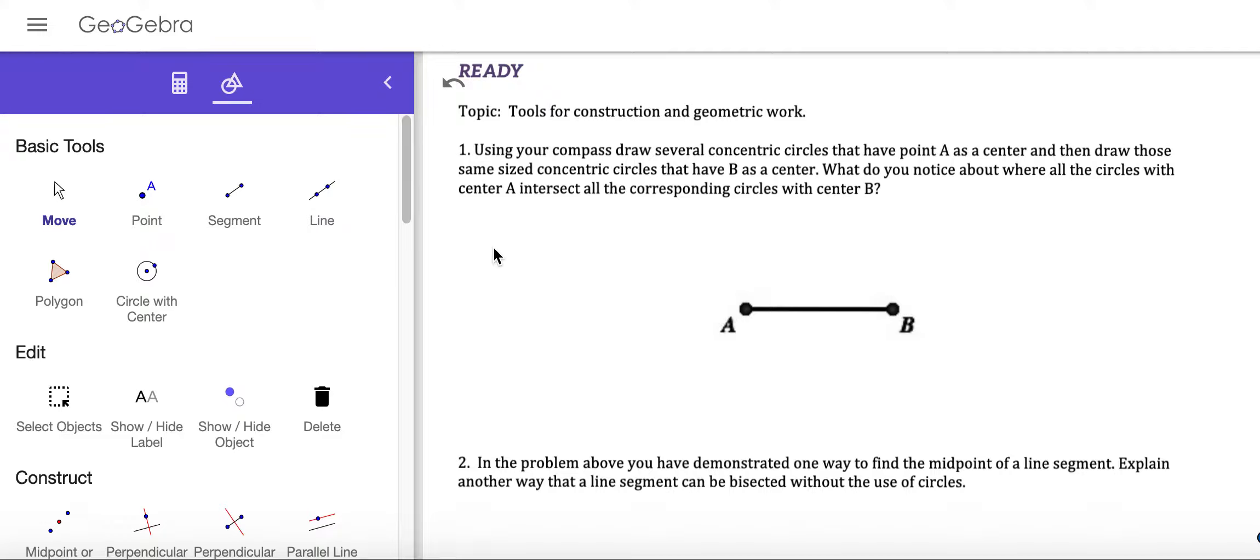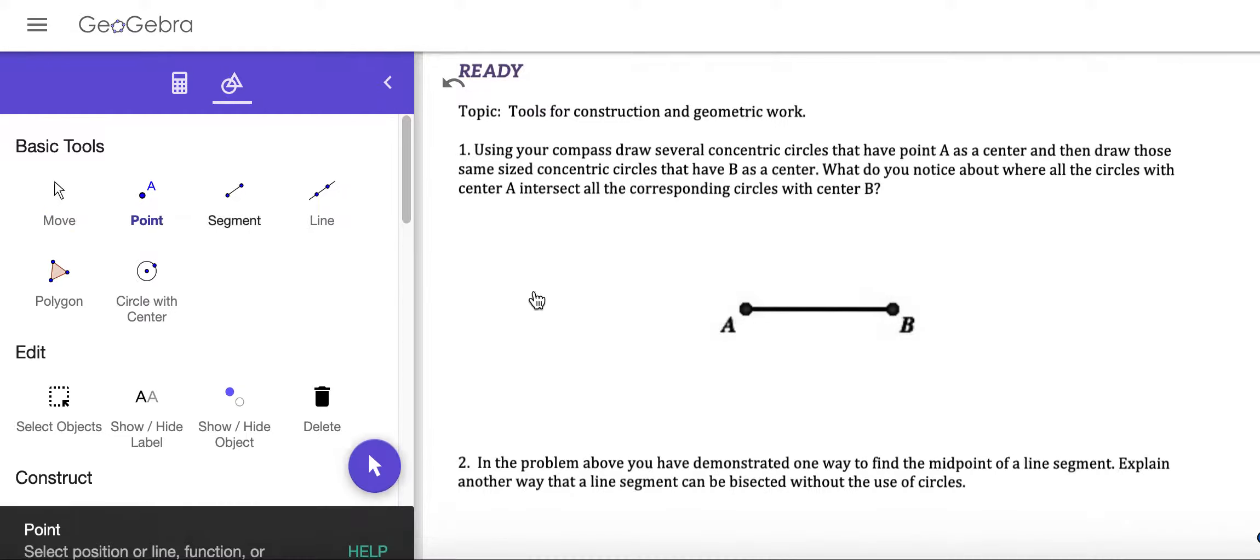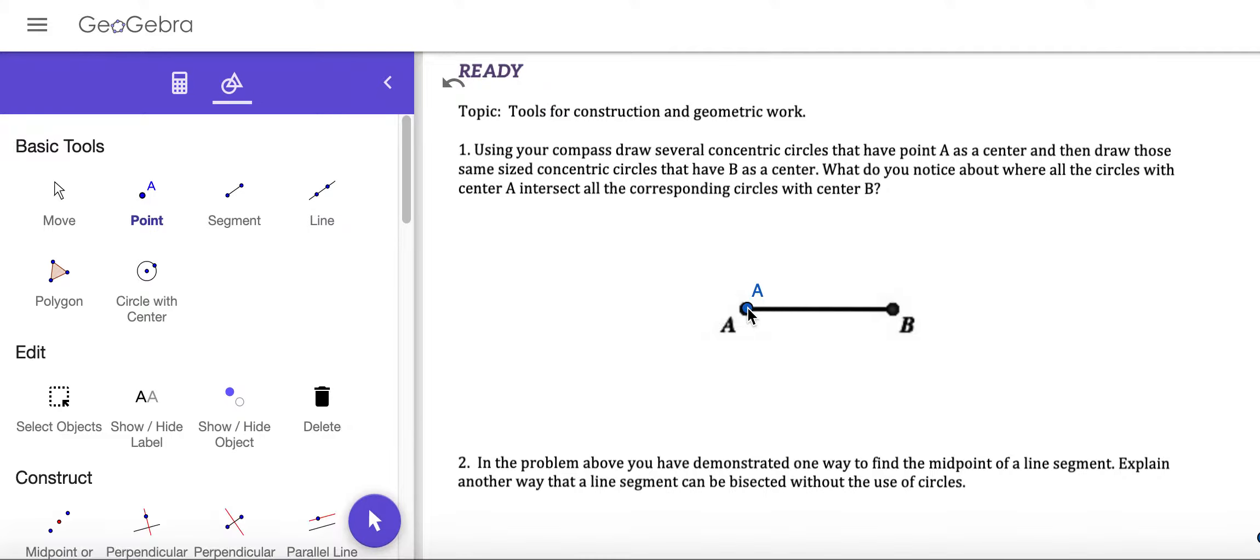We're looking at using your compass to draw several concentric circles that have point A as a center and then draw those same sized concentric circles that have B as a center. So we have point A right here and point B right here.